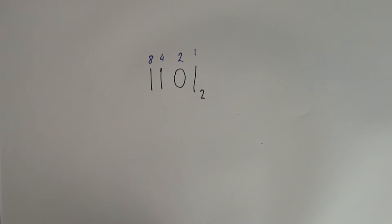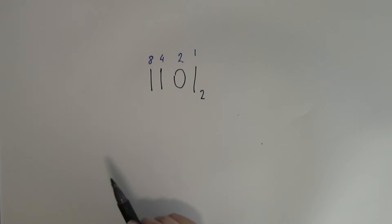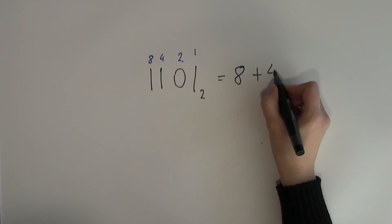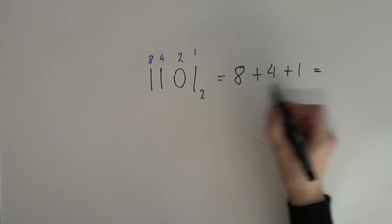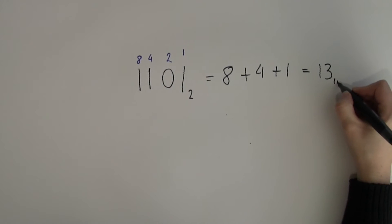Every time I see a 0, I know that 0 will be multiplied by that place value, so I don't need to take it into account. A quicker way of doing the conversion is to only take into account the place values which have a 1 under them. So this number will be 8 plus 4 plus 1. That gives us 8 plus 4 makes 12 plus 1, which is 13 in decimal.